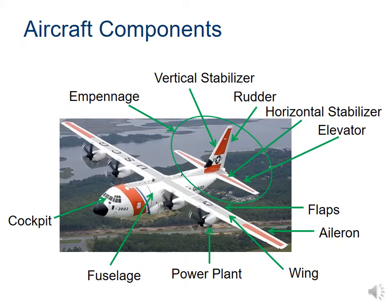Here's another plane — a real plane instead of the sketch — so you'll see all the components in practice. On this one you'll see four power plants, and instead of being located on the nose, those are mounted on the wings. The cockpit is also pointed out in addition to the fuselage.